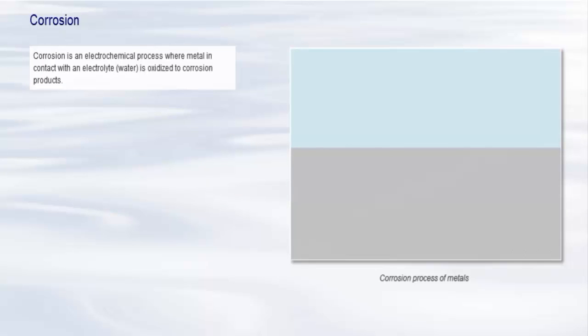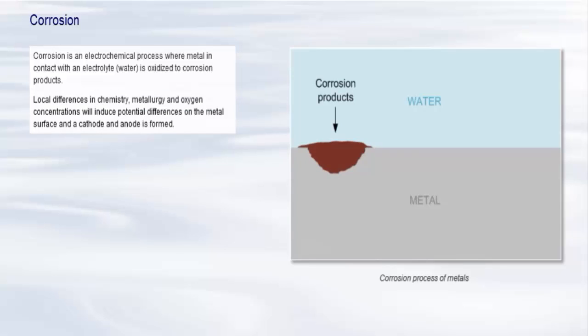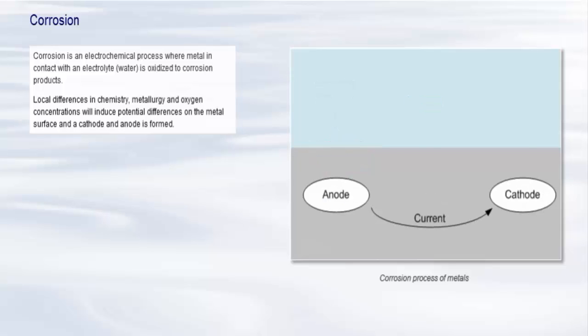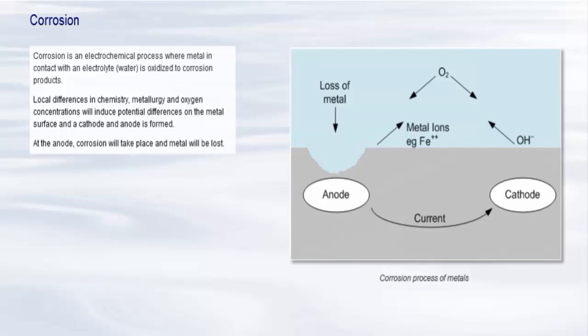Corrosion is an electrochemical process where metal in contact with an electrolyte, water, is oxidized to corrosion products. Local differences in chemistry, metallurgy and oxygen concentrations will induce potential differences on the metal surface, and a cathode and anode is formed. At the anode, corrosion will take place and metal will be lost. Characteristic deposits of iron oxide rust are also formed.